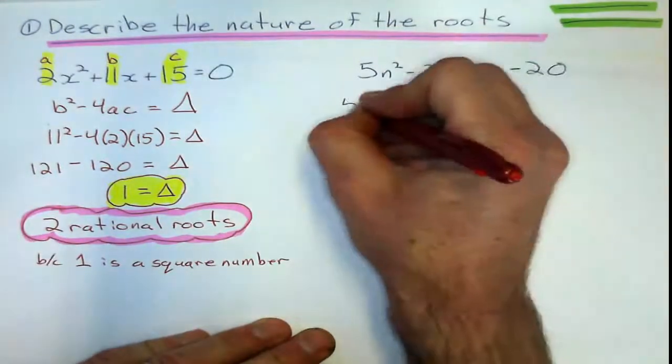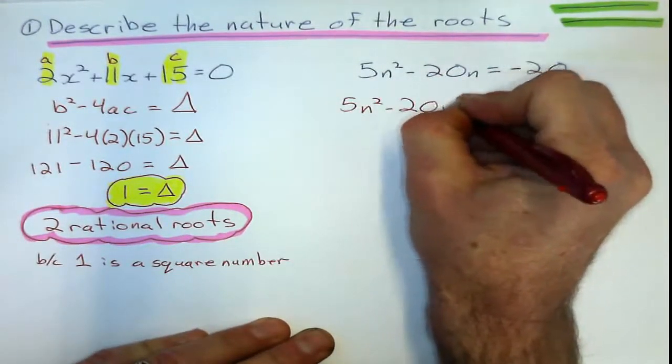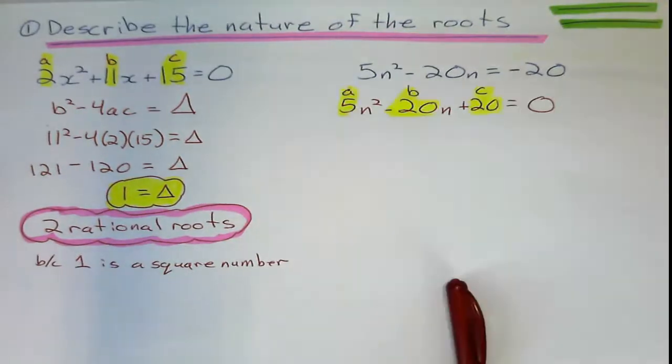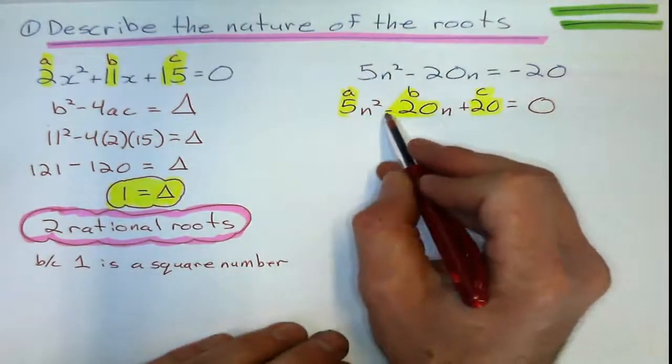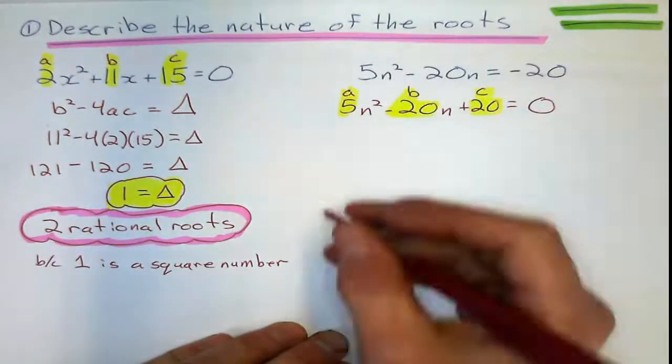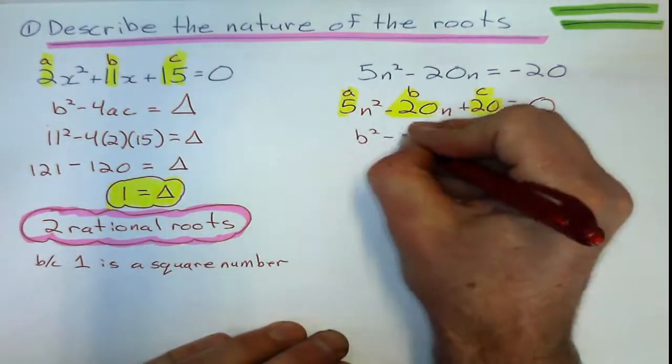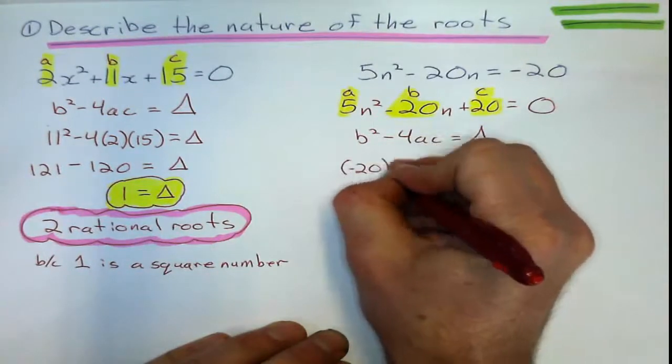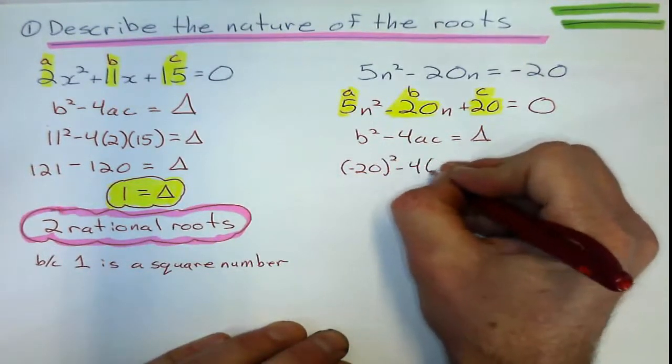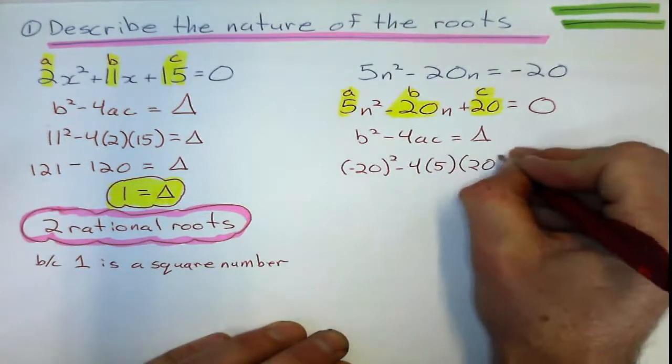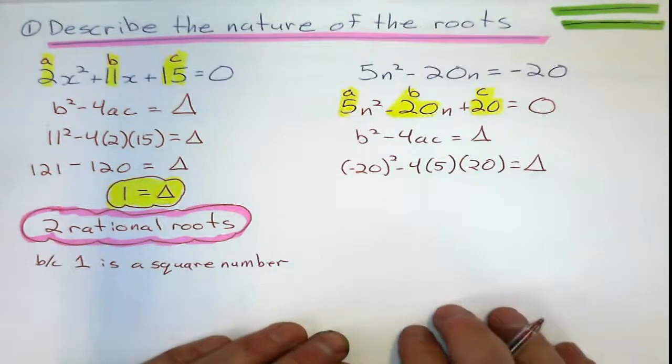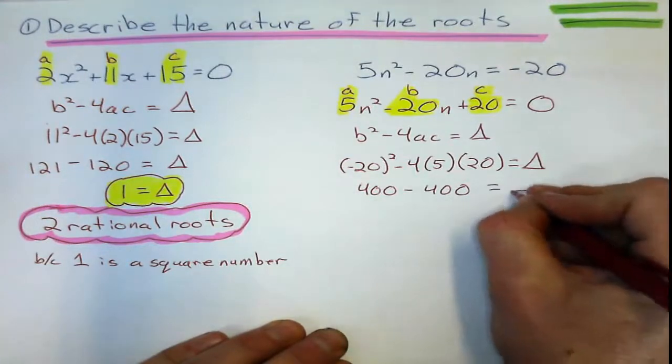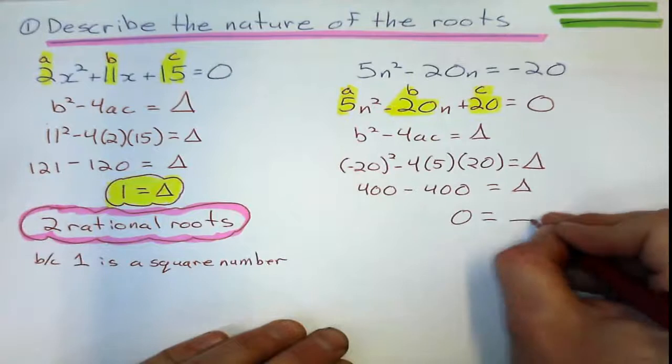Next one. I want to find ABC first, but I have to rearrange this so it's set to 0. So that's a positive 20 equals 0. A is 5, B is negative 20, don't forget that, and C is 20. So that means, what's the value of the discriminant? B squared minus 4AC. Don't forget to put negative 20 in the bracket. B squared minus 4 times 5 times 20. What does that give me? It gives me 400 take away 400 equals 0.